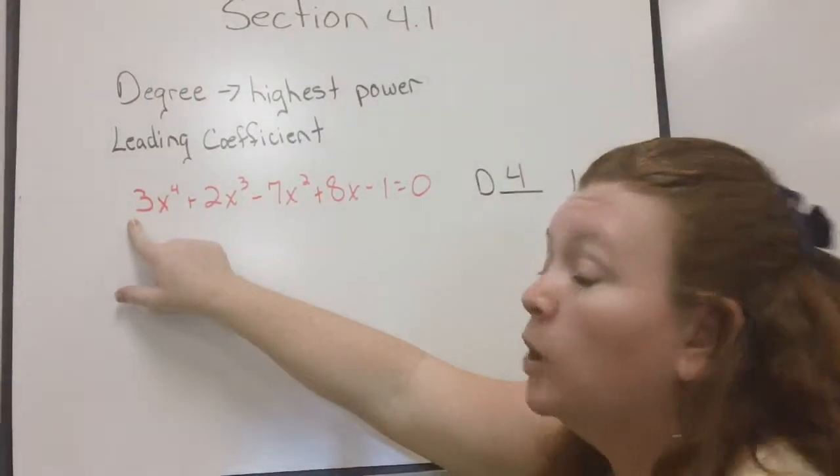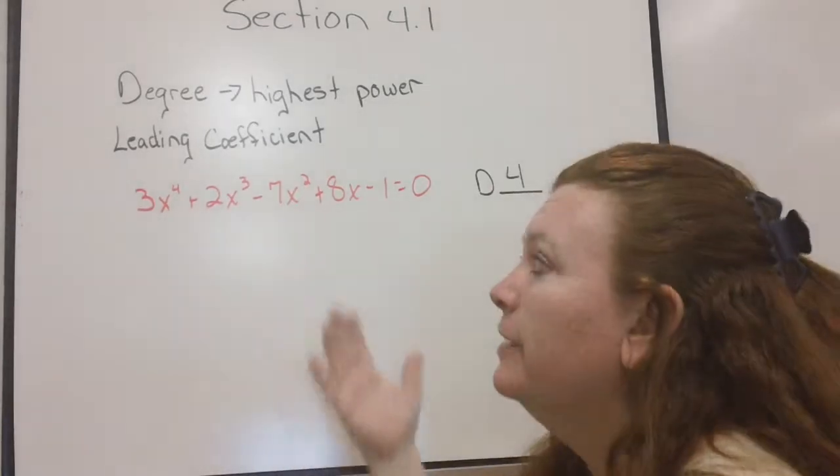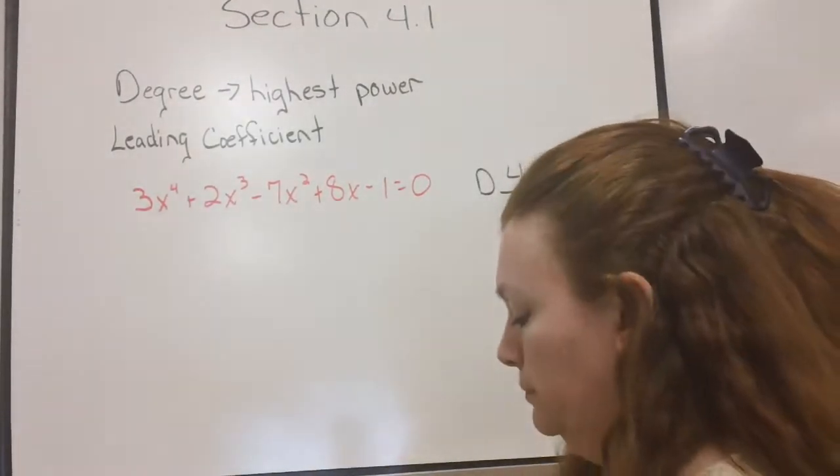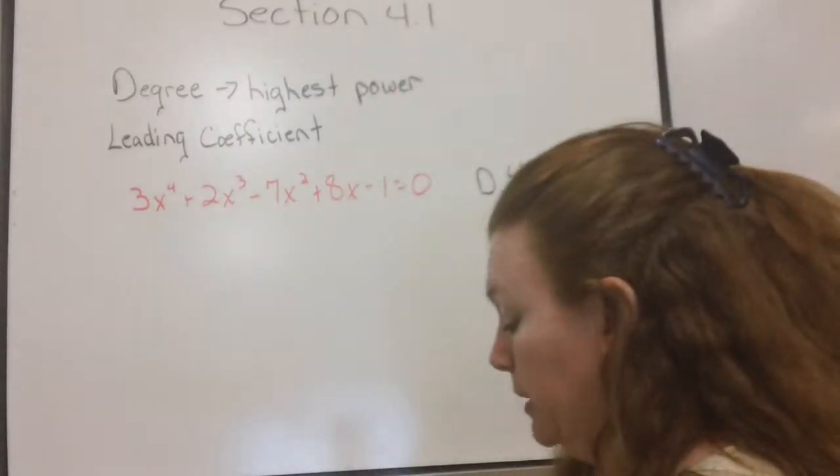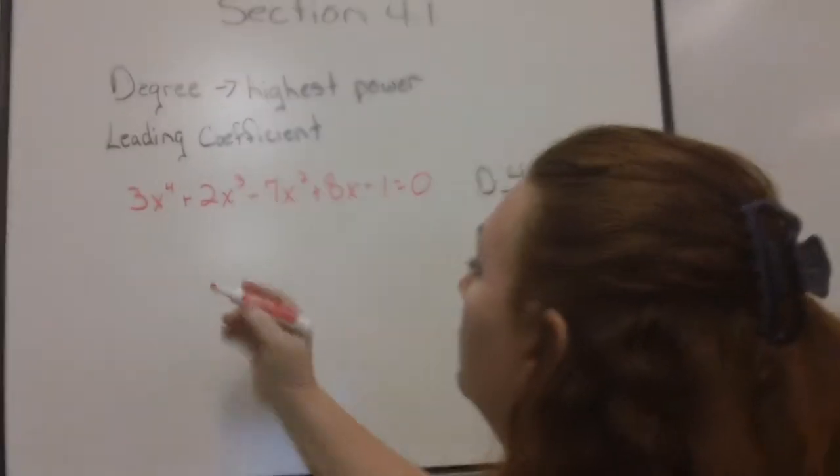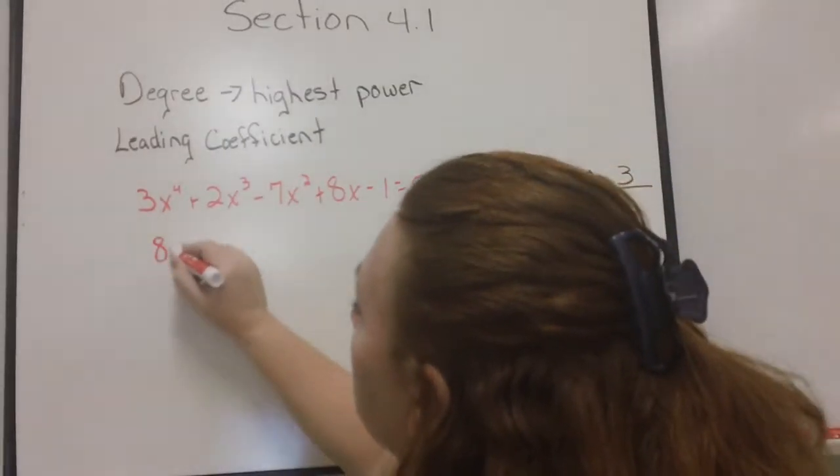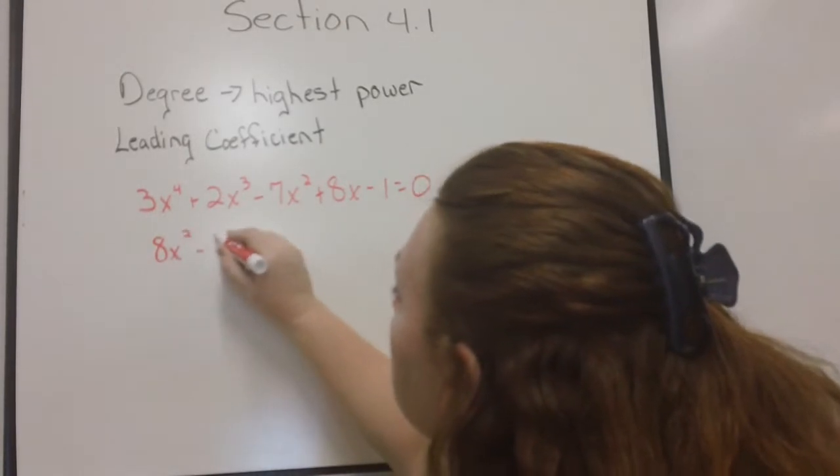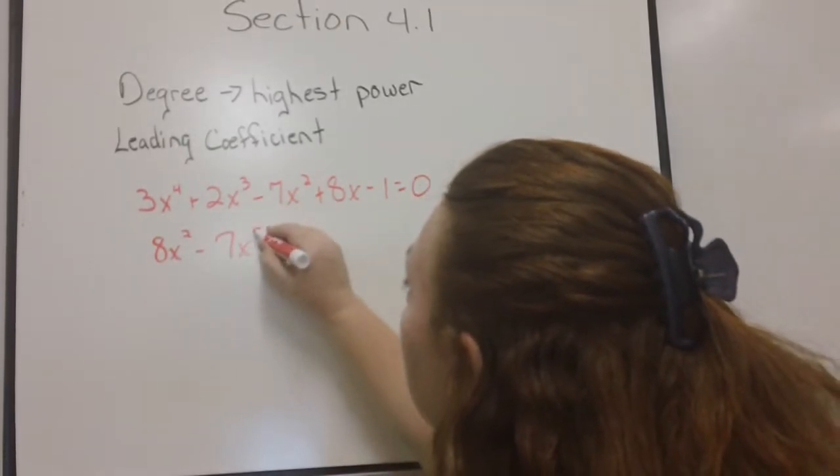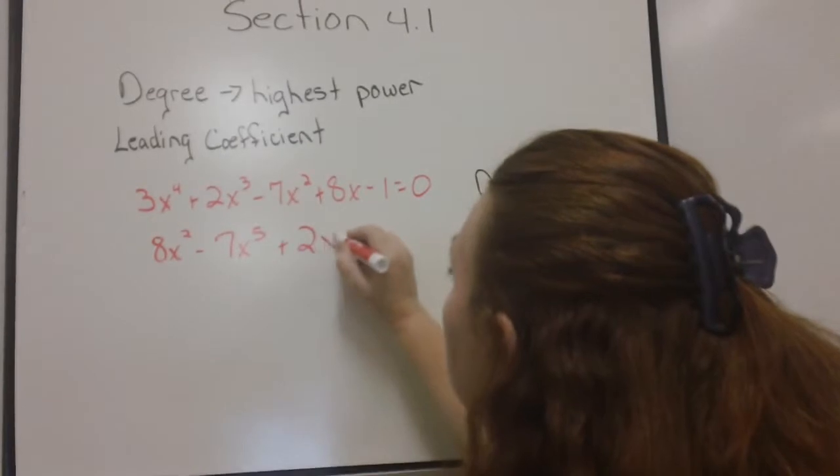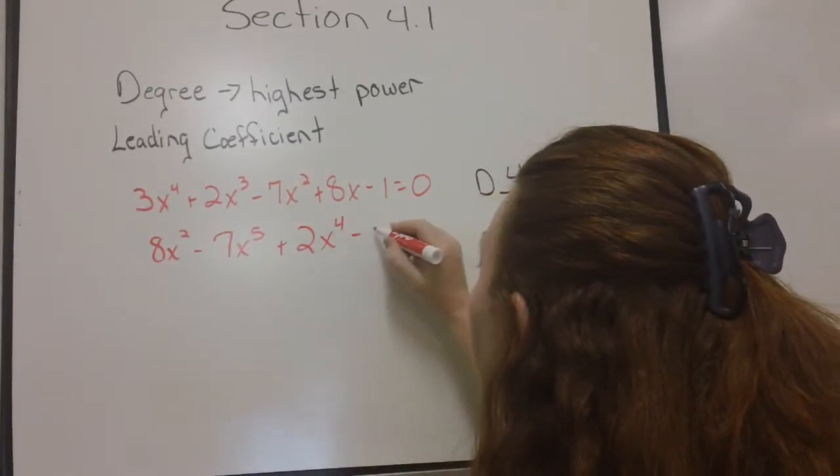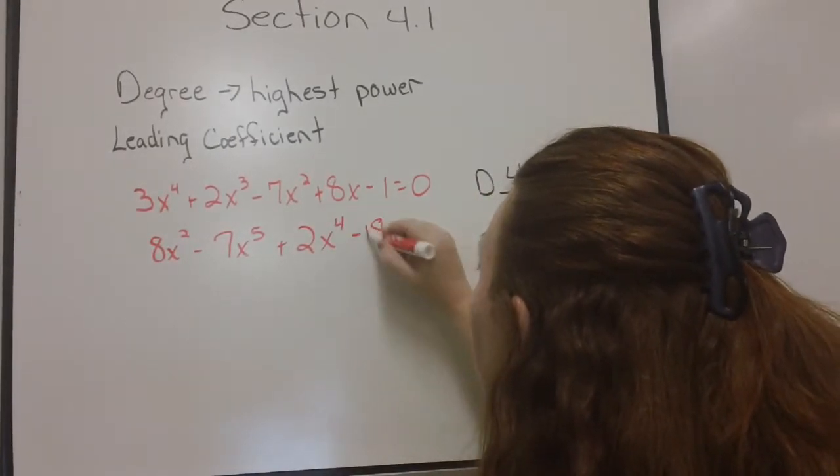However, that only works, as I said, if they're written in the right order. What if we had a problem like this? 8x squared minus 7x to the 5th plus 2x to the 4th minus 18.